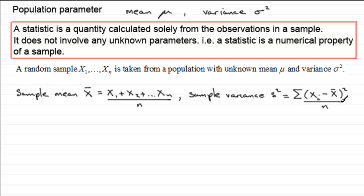Because within this, again, we're not using any of the population parameters, μ or σ². So these are examples, then, of statistics.